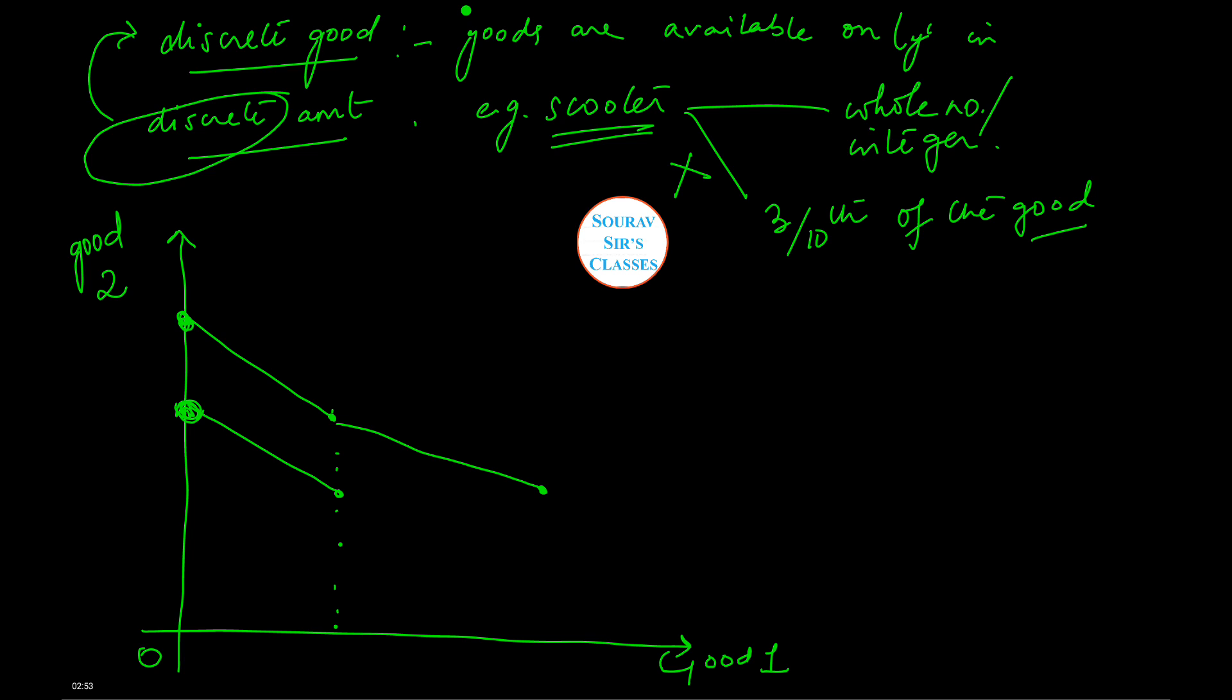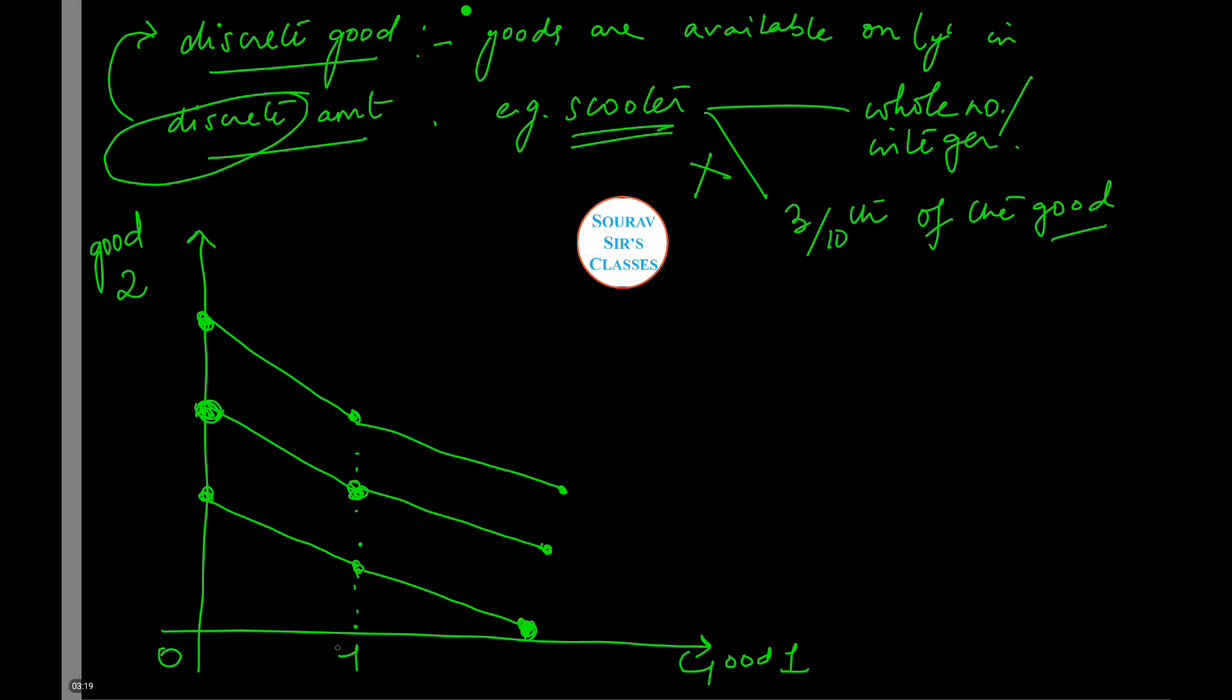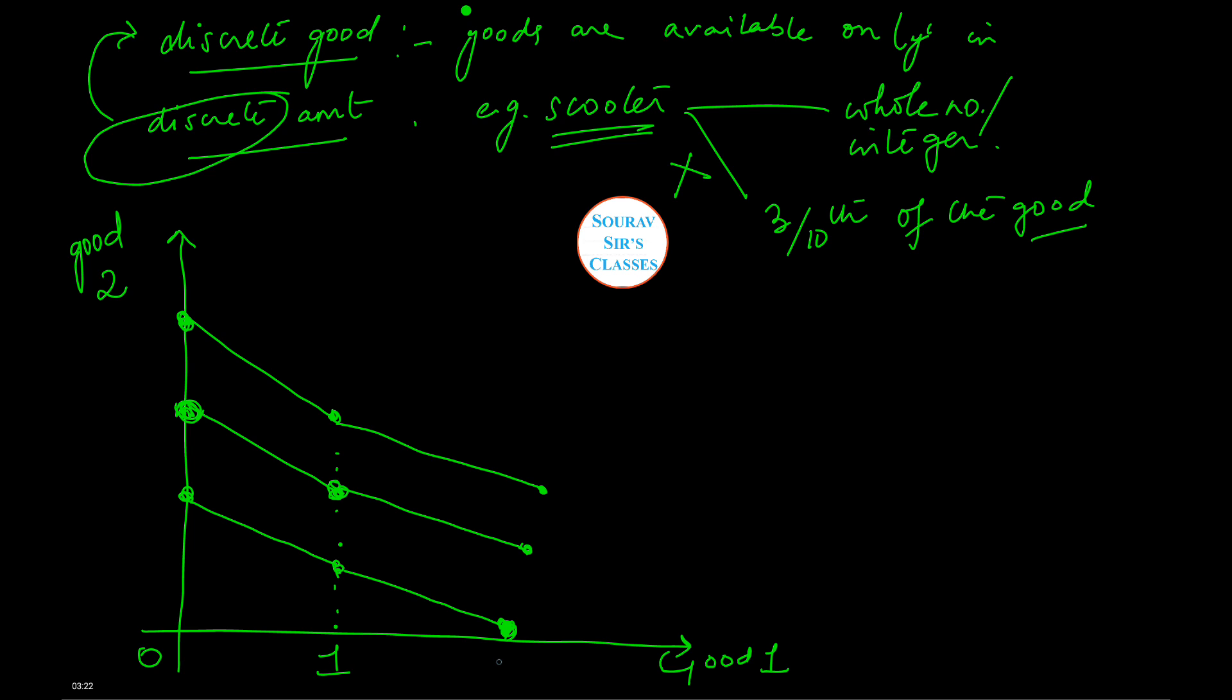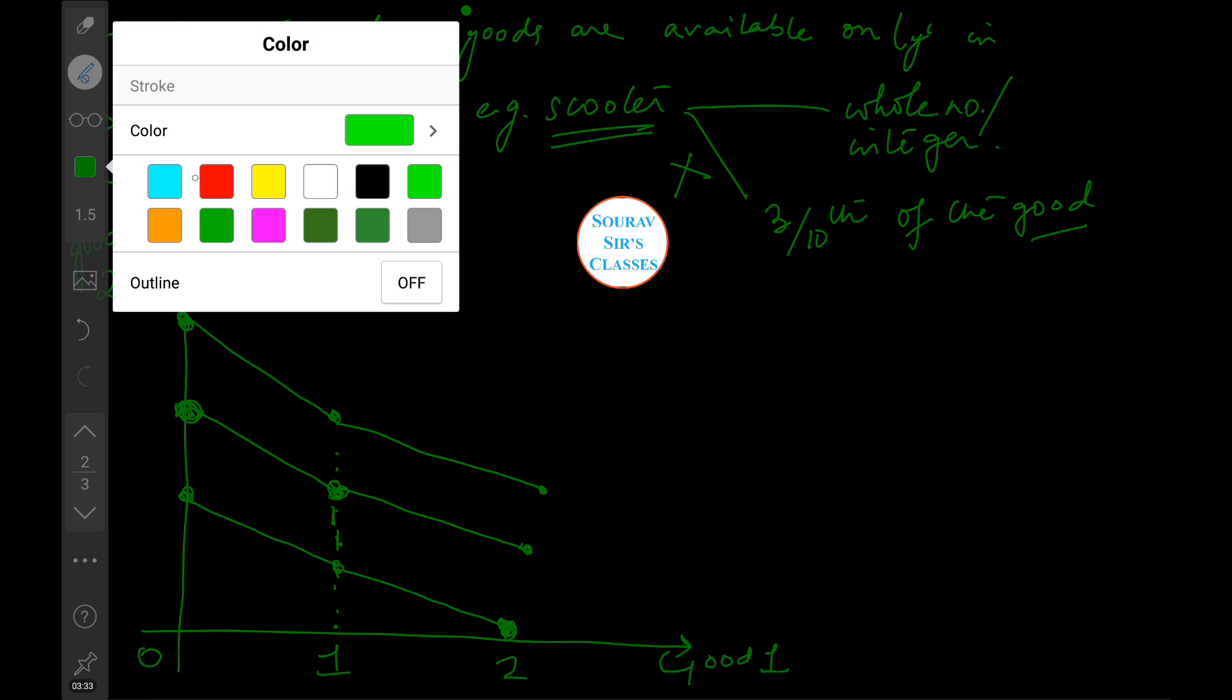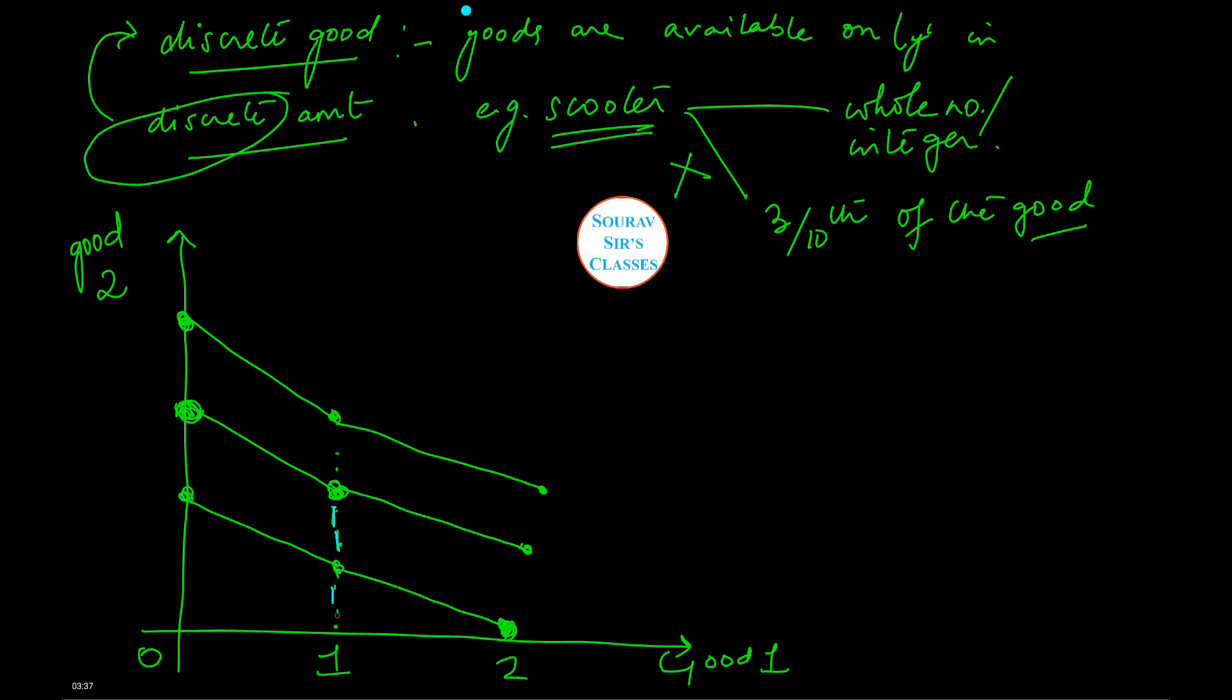We can join it also. There is no problem. Now you must be wondering why we are... This is one. So discrete unit. Good 1 is measured in discrete units. And say this is two. Let me do this for you guys. Let me change the color.